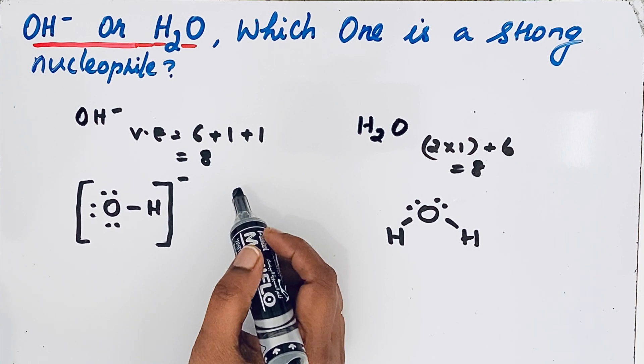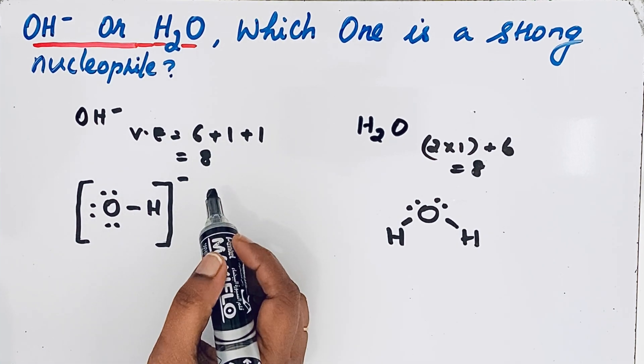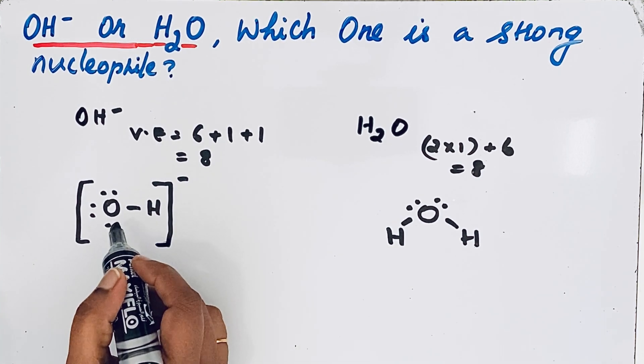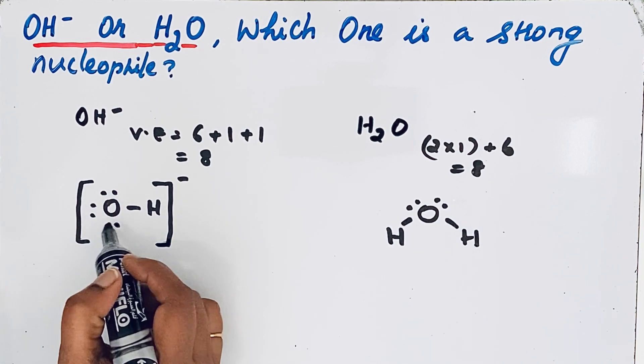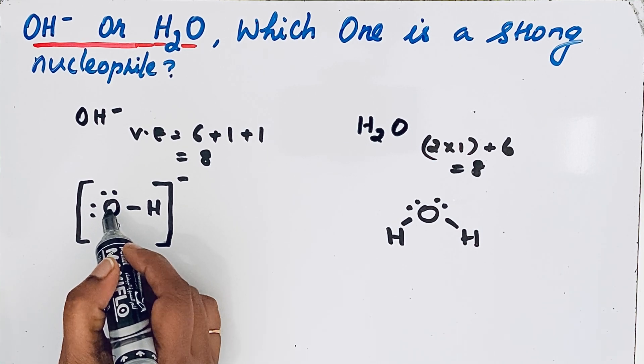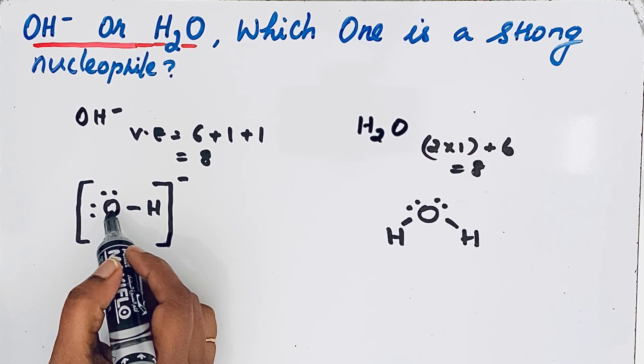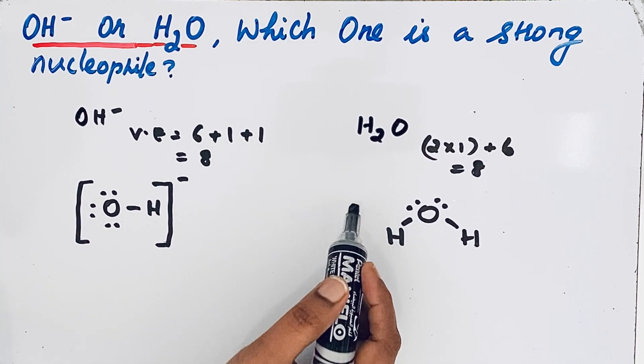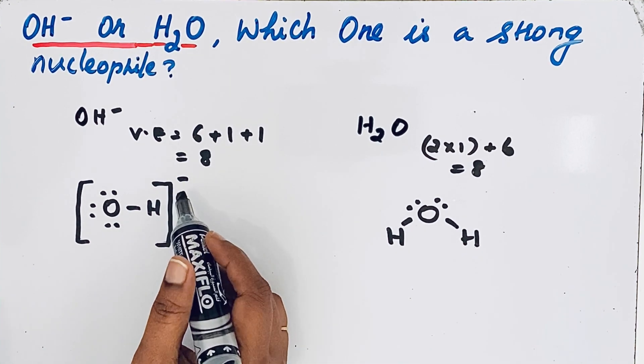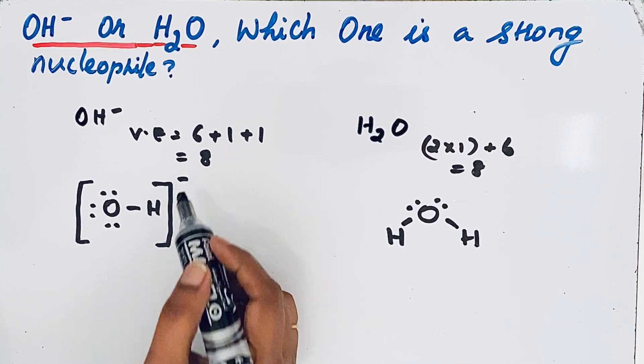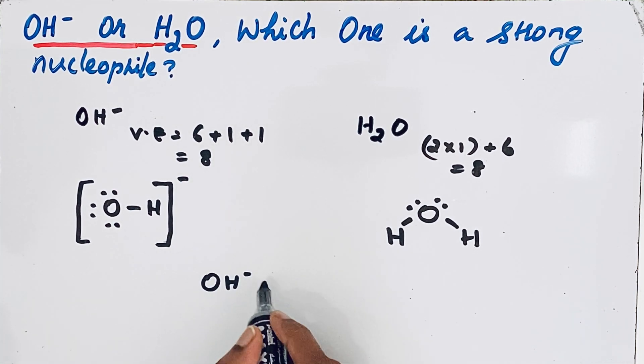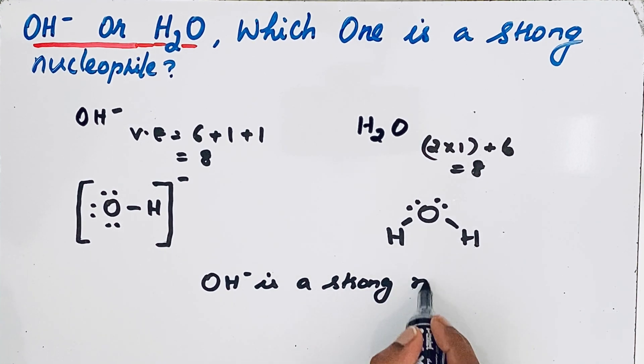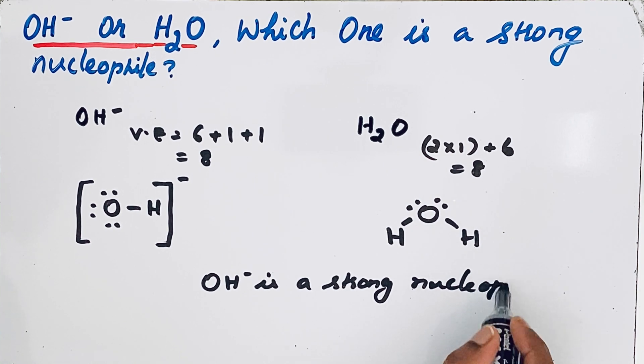Nucleophiles are electron rich species which can donate their electrons to electron deficient atoms. So when comparing this oxygen with this oxygen, due to the 3 lone pair electrons on this oxygen, this oxygen is more electron rich. That is why when compared to H2O, OH- is a strong nucleophile. It also carries a minus charge. So OH- is a stronger nucleophile than H2O.